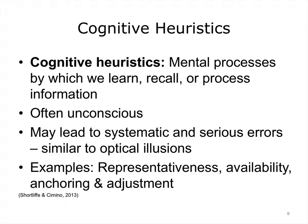Cognitive heuristics are mental processes by which we learn, recall, or process information. These processes are often unconscious and may lead to systematic and serious error, similar to optical illusions. Examples of cognitive heuristics include representativeness, availability, and anchoring and adjustment.